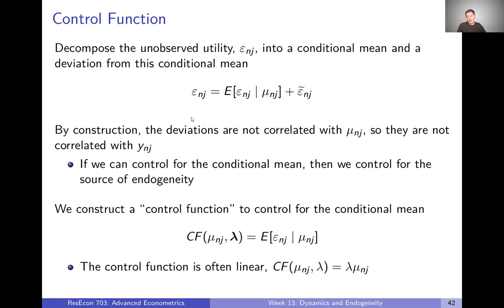Essentially, we're going to control for this conditional mean. We're going to control for the source of endogeneity. So we construct a control function, denoted CF, that equals that conditional mean. It's a function of mu and some parameters called lambda. What's often done is just assume that control function is linear, so that control function just equals lambda times mu.